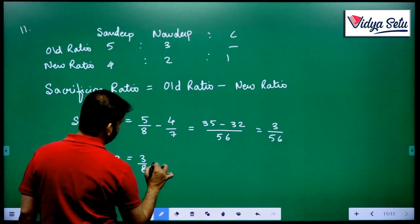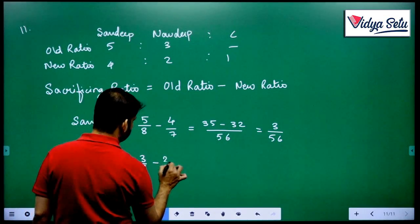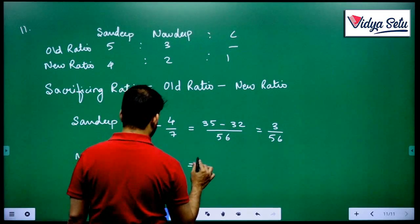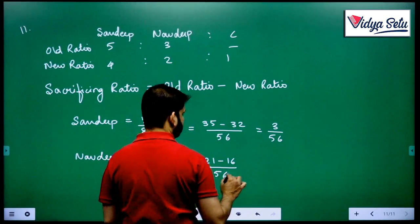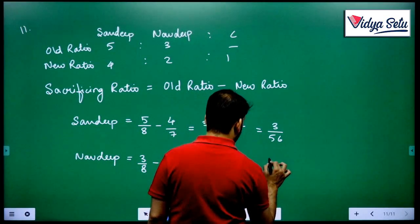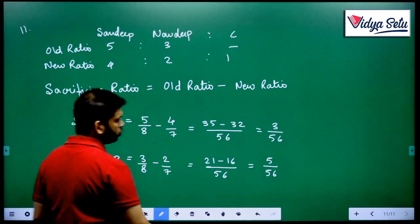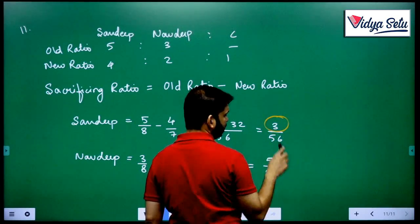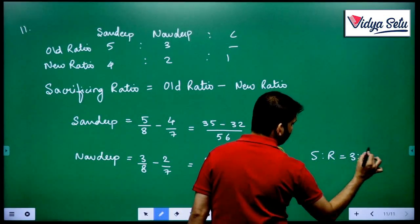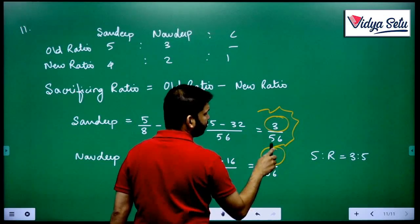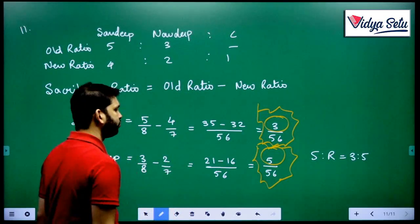For Navdeep, he was having 3 by 8, new ratio is 2 by 7. So 21 minus 16 upon 56 equals 5 by 56. So the ratio in which they are sacrificing is 3 is to 5. Sacrificing ratio equals to 3 is to 5, and the total fractions are 3 upon 56 and 5 upon 56.